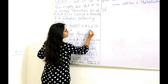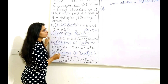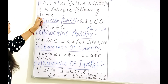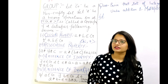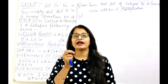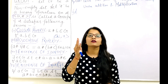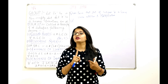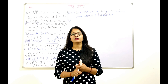For example, if you want to check the set of natural numbers with the operation plus, we will check whether G star is called a group if it satisfies the following axioms. Keep in mind that if you have to prove that one set is forming a group, then we have to satisfy four properties. If any of these properties are not satisfied, we will not consider that set to be a group.